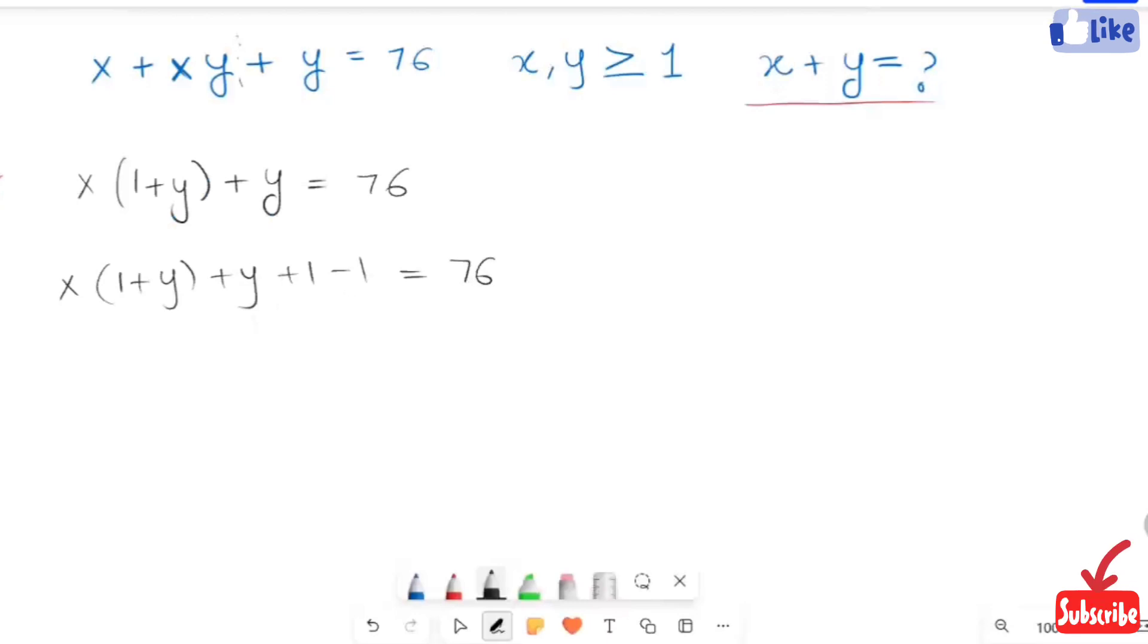So here I'm going to write 1 plus y plus 1 plus y and take this negative 1 to the right side so it turns to 76 plus 1.